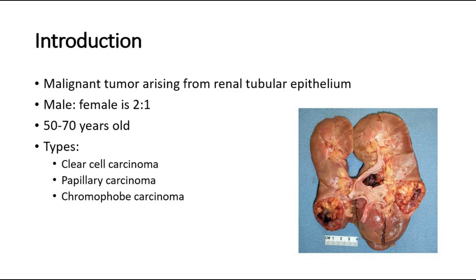Clear cell carcinoma arises from the proximal tubules within the kidney. Papillary carcinoma accounts for around 10 to 15% of cases and arises from the distal tubules. Chromophobe carcinoma arises from the collecting tubules and is the least common, accounting for around 5% of all cases.